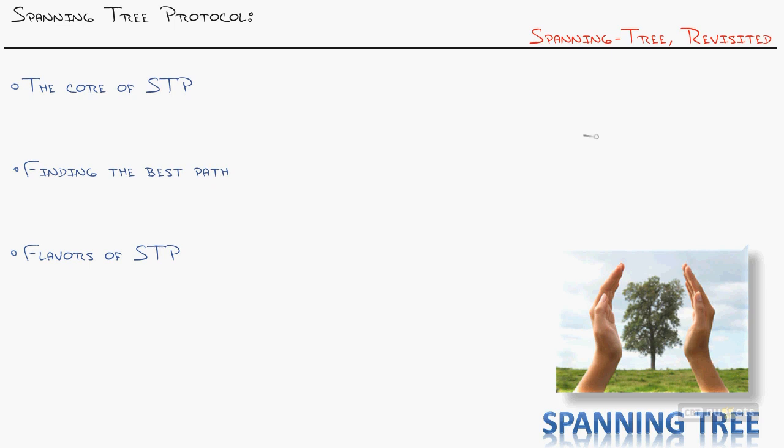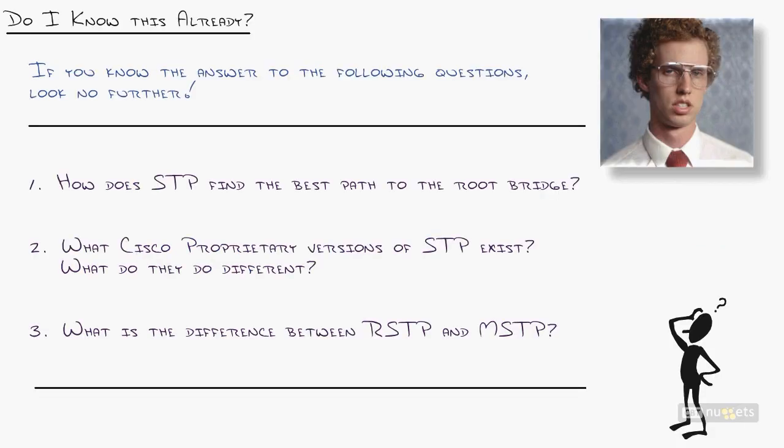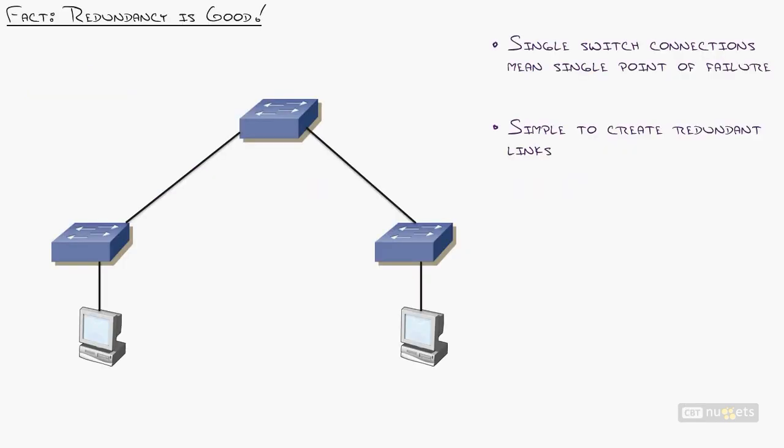This nugget is all about revisiting spanning tree. We originally talked about this in the SPNGN1 series as kind of the foundation, so I'm going to revisit some of those concepts and introduce some new ones — like what are the different flavors of spanning tree and what do we use in the service provider network. Here are your 'do I know this already' questions — pause, look at these, and if you feel like you got it, jump to the next nugget.